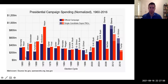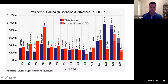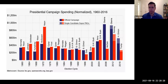This chart, from 1960 to 2016, adjusted for inflation, shows how much each candidate spent in each election. In 1960, Nixon and Kennedy spent about the same, and Kennedy went on to win. You can see a trend here — usually, but not always, the candidate that spends more money wins.